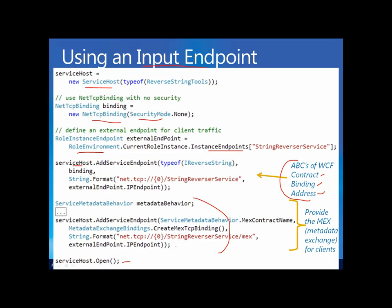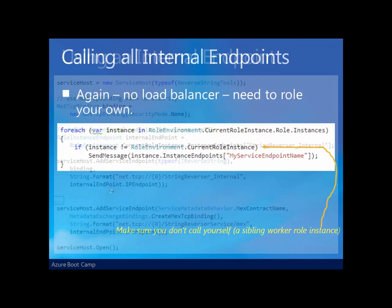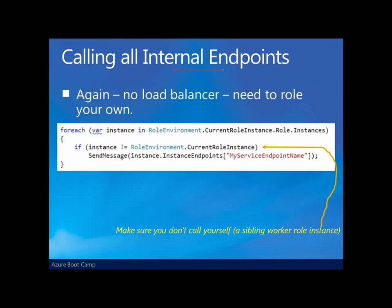How does that change when we use an internal endpoint — one not exposed outside? The code is almost identical. The only real difference is in setting up the internal endpoint versus the input endpoint when addressing and adding to the service host. Don't forget: on internal endpoints, those that are not publicly exposed, there is no load balancing. So if you have more than one instance of that worker role as an internal endpoint, you'll need to roll your own load balancing — for example, a for loop to send messages to each instance. Be careful to check that you're not sending a message back to yourself, creating an infinite loop.